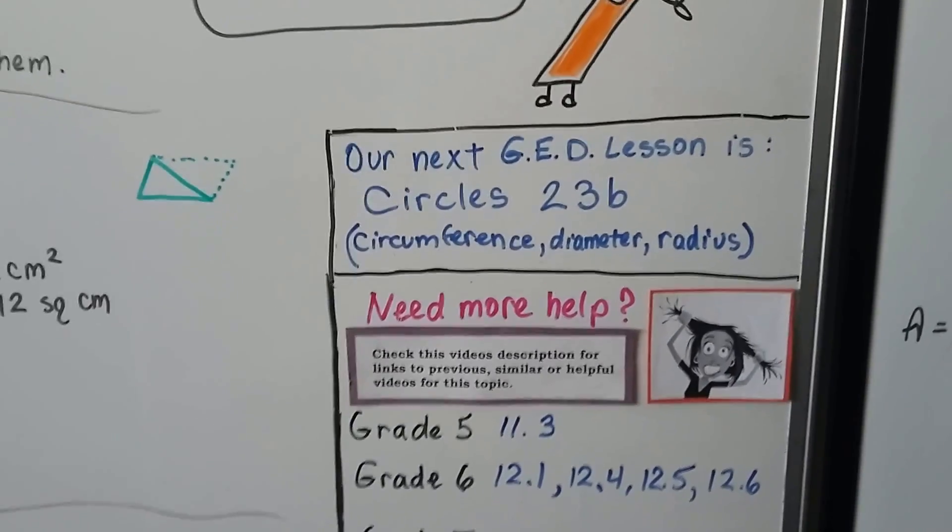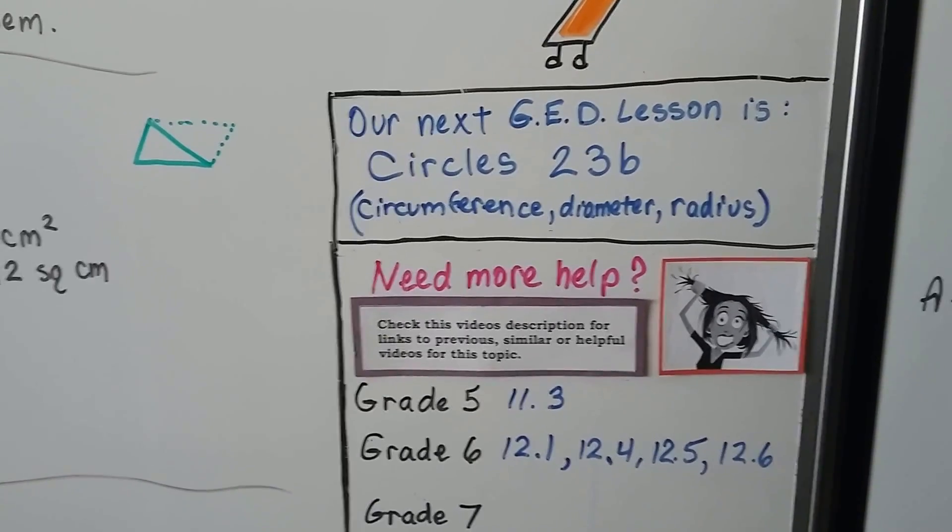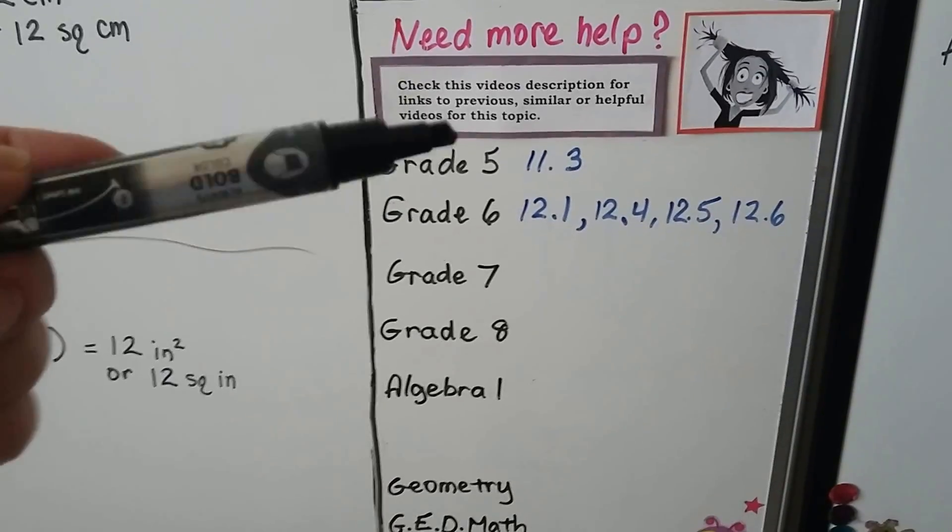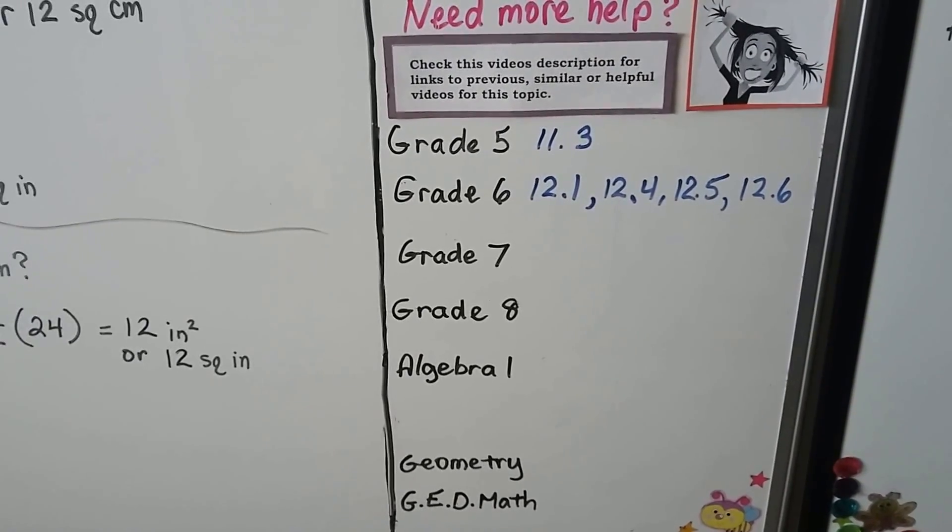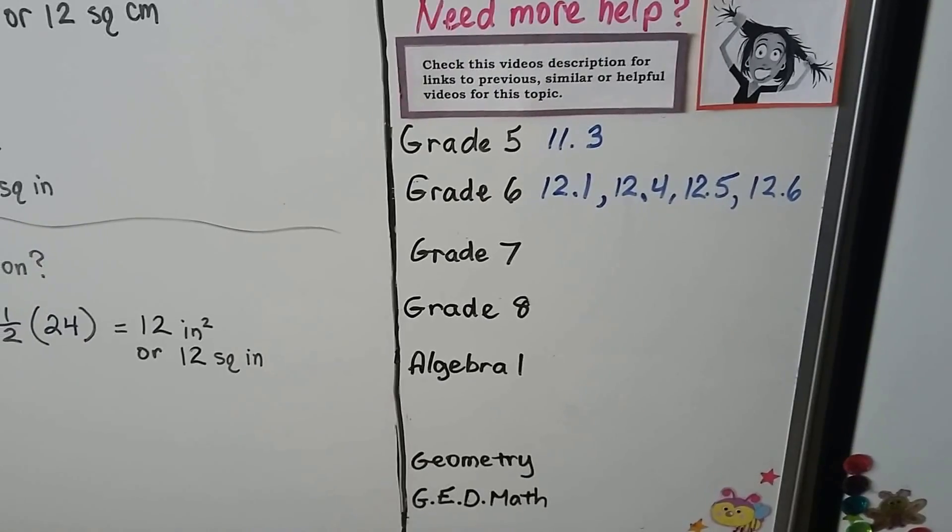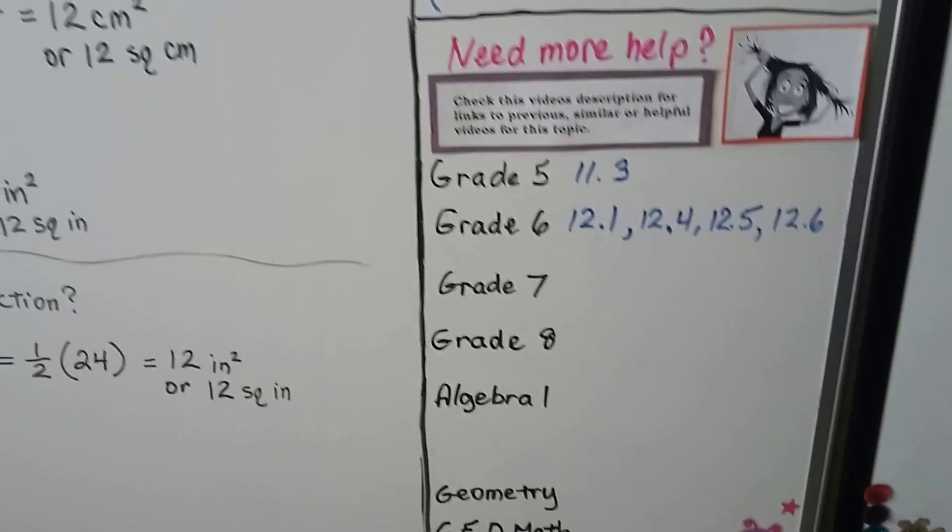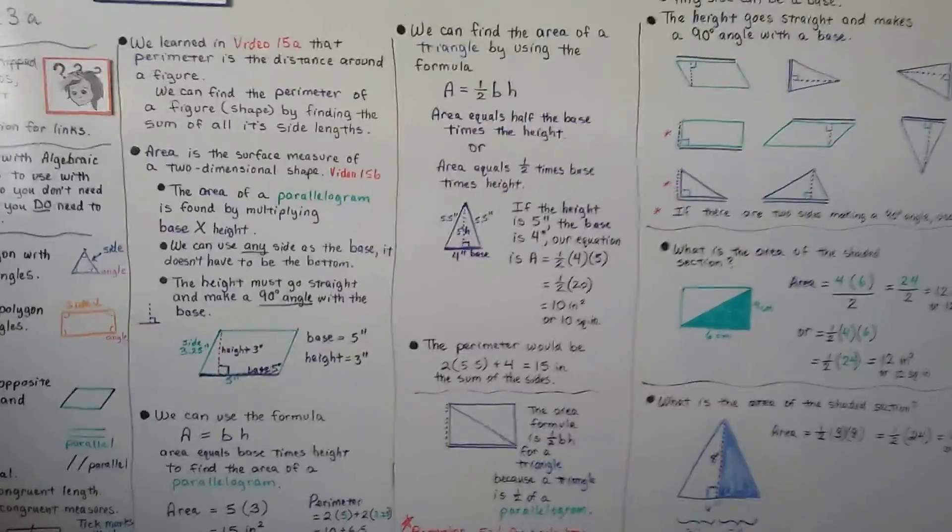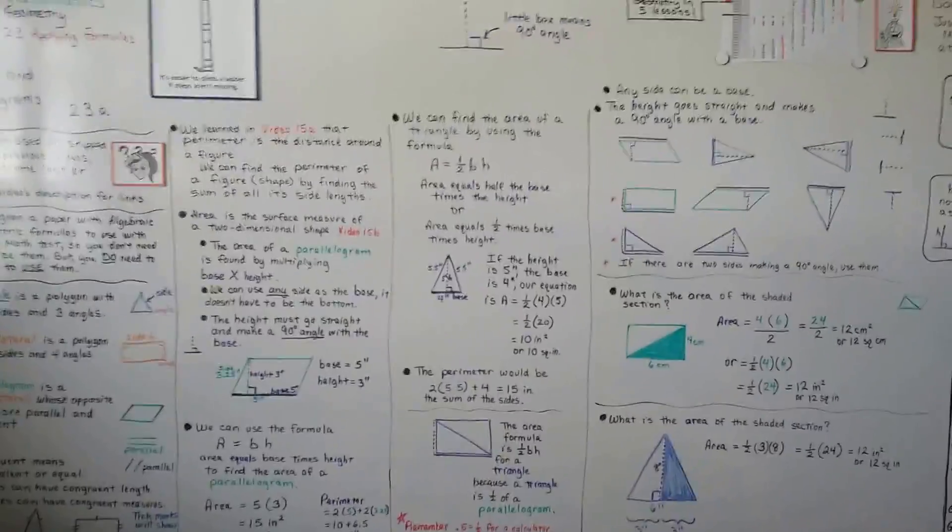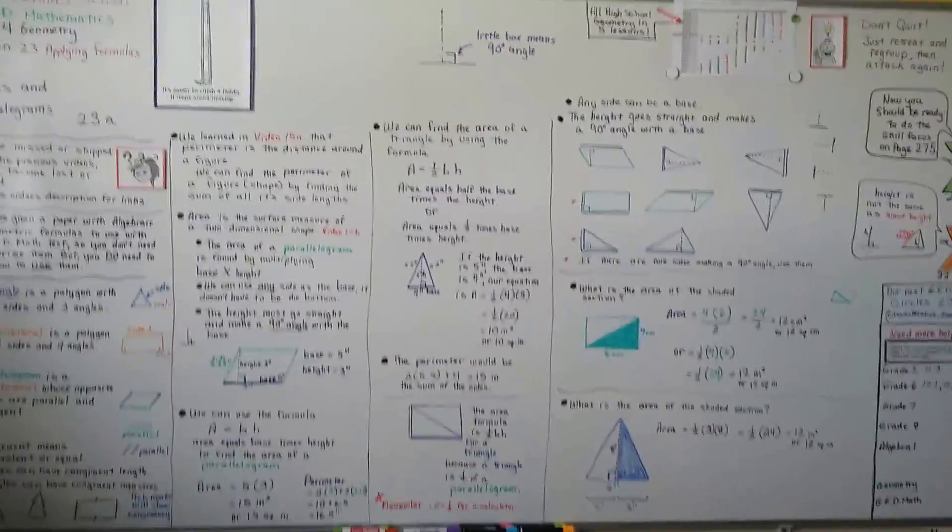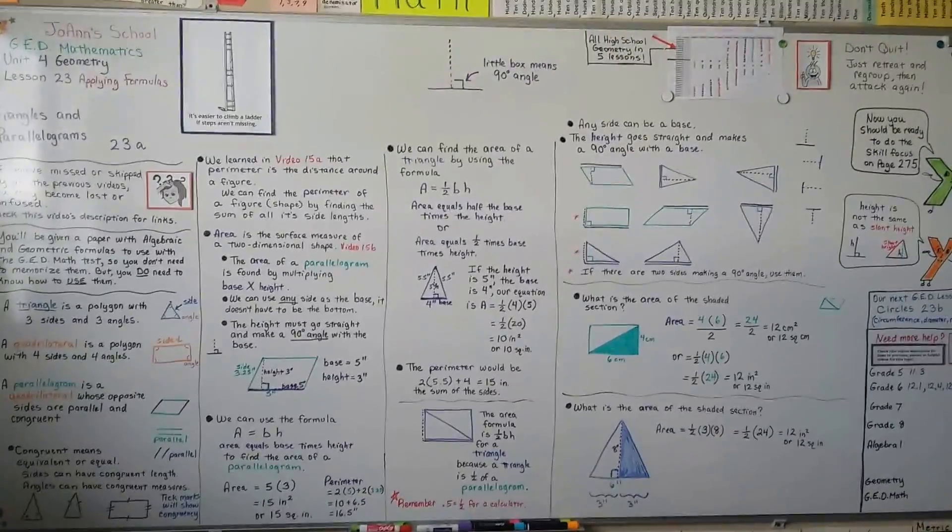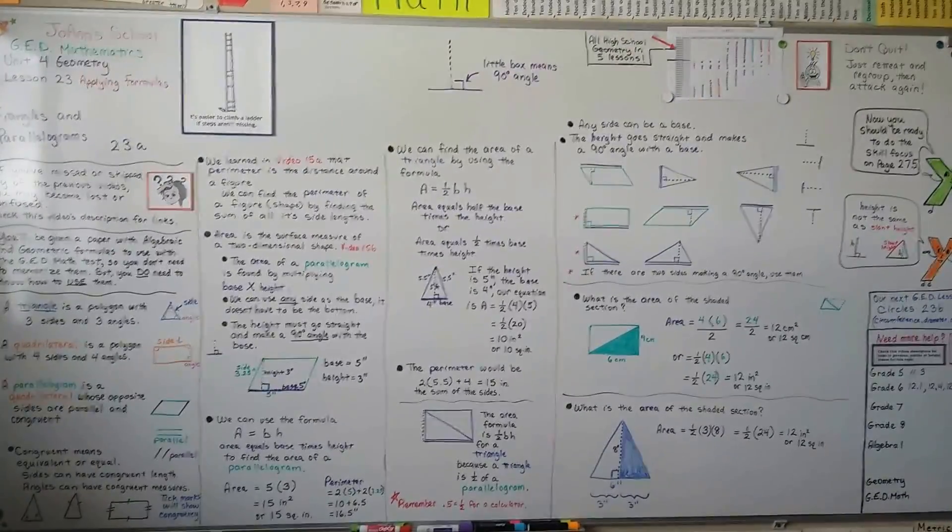Our next GED lesson is circles. We're going to talk about circumference, diameter, radius, and how to use the formulas to find them. And I'll have links to those helpful grade five and grade six math videos in the description. So I hope you're doing well. Remember if you ever get confused, just watch the linked videos in the description and try to watch every video in the playlist because that's only going to help you pass the test. Have a great day. I'll see you next time. Bye.